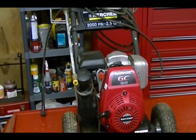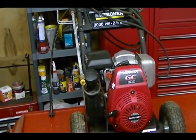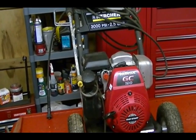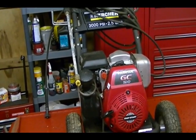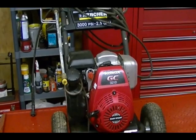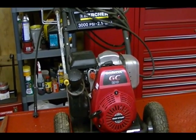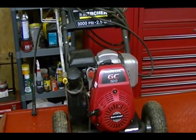This is a Karcher pressure washer and the engine used on this piece of equipment is a Honda GC 190 single cylinder four-stroke engine. In this video I'm going to show you how to check the kill switch to see if it's operating correctly.